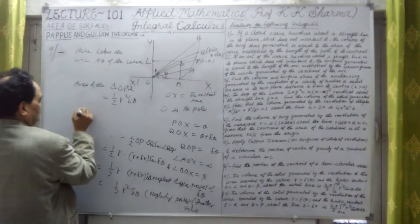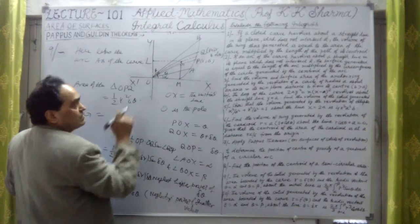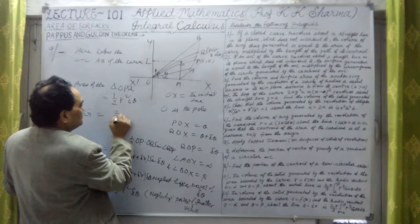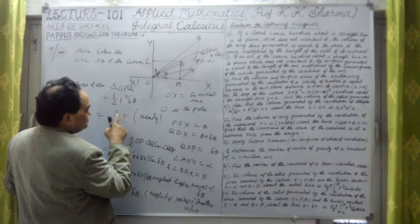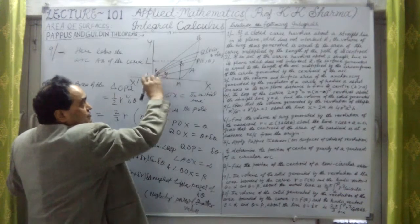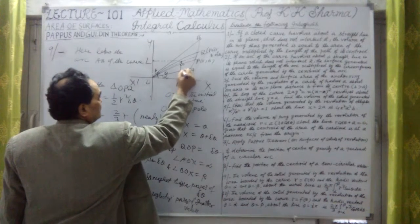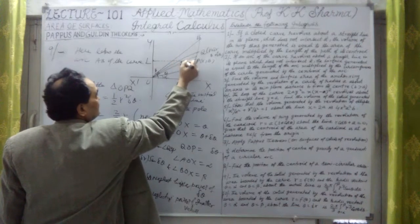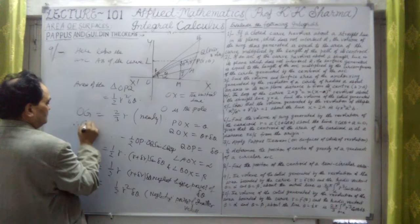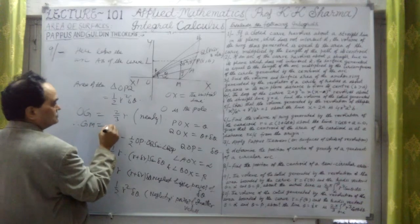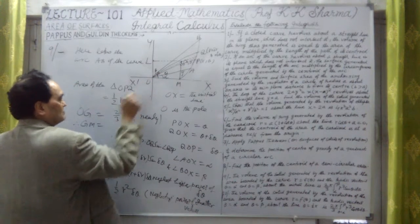Now OG is the length of the centroid of this triangle. OG = (2/3) × r approximately. We need to calculate GM, which is y-bar. GM is perpendicular to OX. In the right triangle OMG, we have OG with angle θ at O, so GM = OG × sin(θ).